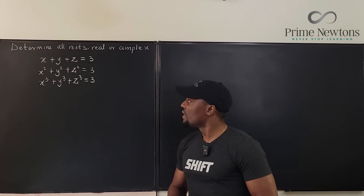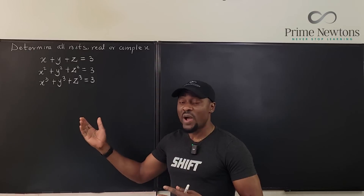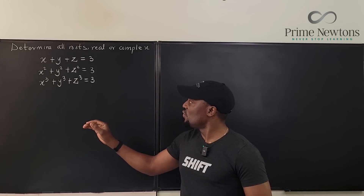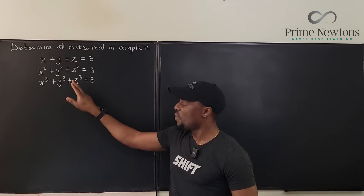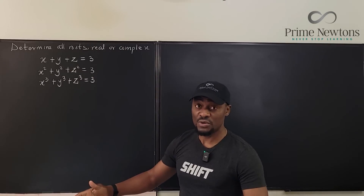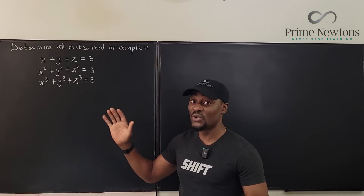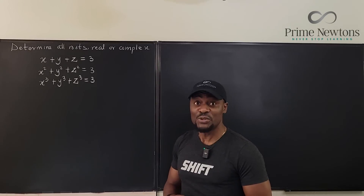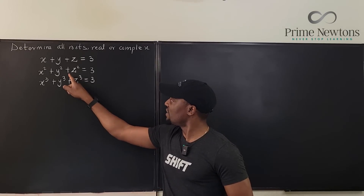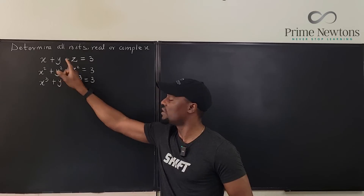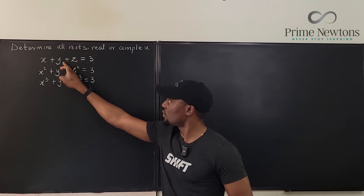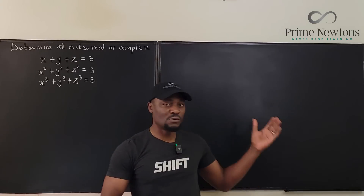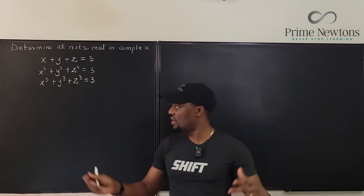Whenever you have this symmetric type of equations, you want to write one equation in terms of another or do a smart substitution. A good substitution doesn't seem available here, so what I can do is try to generate the second equation from the first one by squaring it. Squaring won't give the second equation directly, but it gives a useful form.